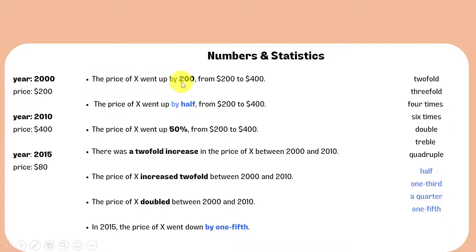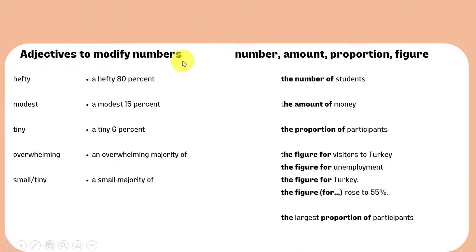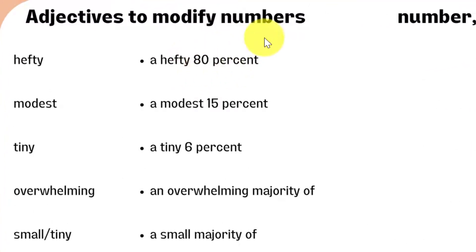The first sentence uses a number to express how much the price increased in 2010. The second sentence uses fractions. The third sentence uses a percentage to talk about the change in price. The next sentences show how you can talk about increases and decreases using different words, avoiding only numbers and percentages. To add more depth to your description, you can use adjectives to modify numbers — for example: 'a hefty 80%,' 'a modest 15%,' 'a tiny 8%,' 'an overwhelming majority of,' or 'a small majority of.'